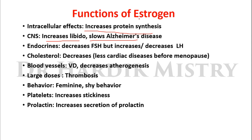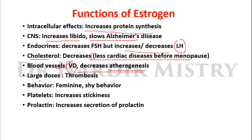Intracellularly, estrogen increases protein synthesis. On the CNS, it increases libido and slows down Alzheimer's disease. On the endocrine system, it decreases FSH, and either increases or decreases LH depending on the day of the menstrual cycle. Females in reproductive age are less prone to cardiac disease because estrogen decreases cholesterol levels in blood vessels, causes vasodilation, and decreases atherogenesis. At large doses, estrogen can cause thrombosis. There is also increased platelet stickiness and increased secretion of prolactin.